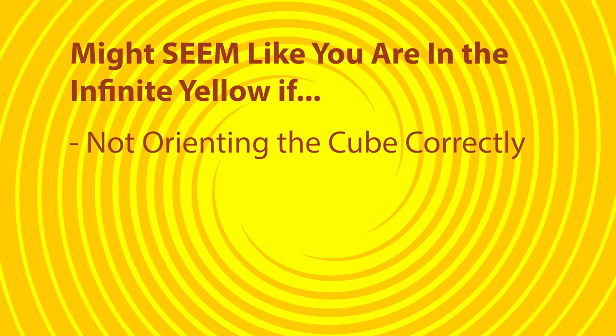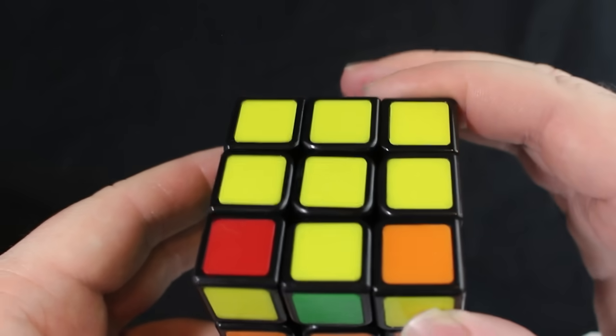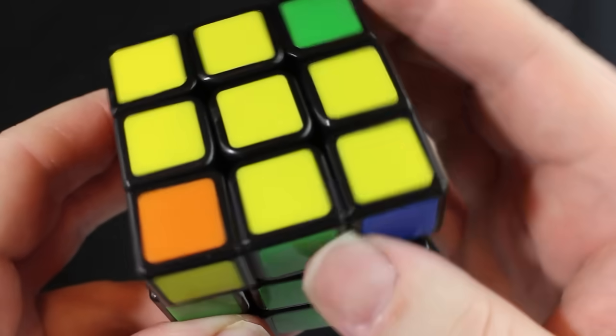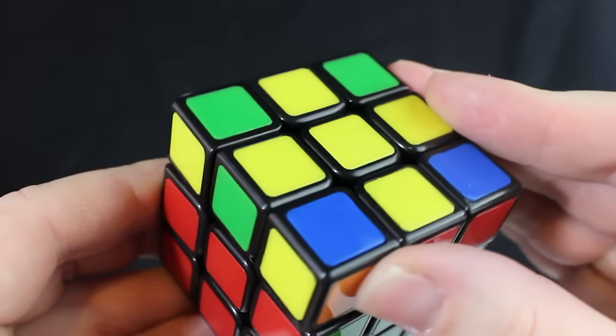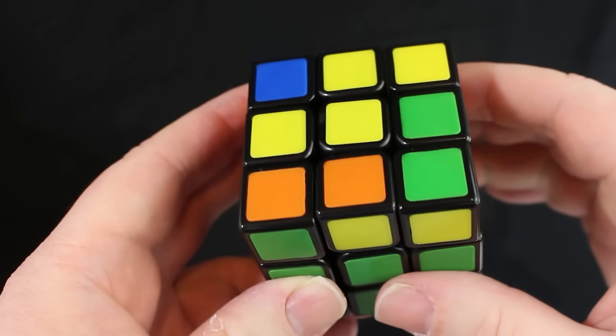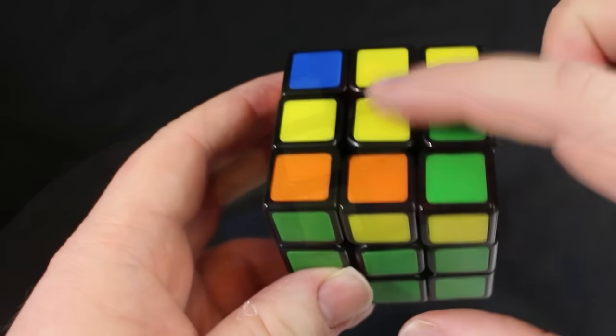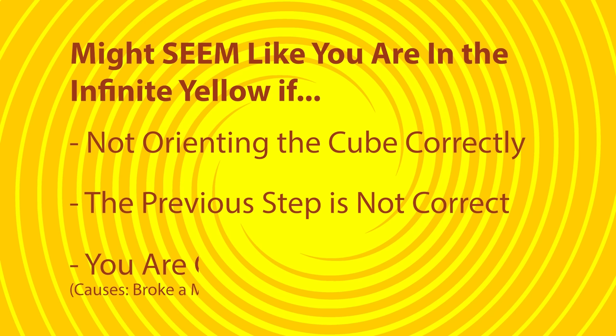Not orienting the cube correctly. If it's a fish, you need to make sure it's turned to the bottom left. The turtle needs to be facing towards you. You need to make sure the crab is in the right position. The clean plus should have those two dots on the left. The previous step is not correct. If step five isn't solved, then you will never be able to solve step six. Make sure you actually have the yellow plus before trying to do step six.